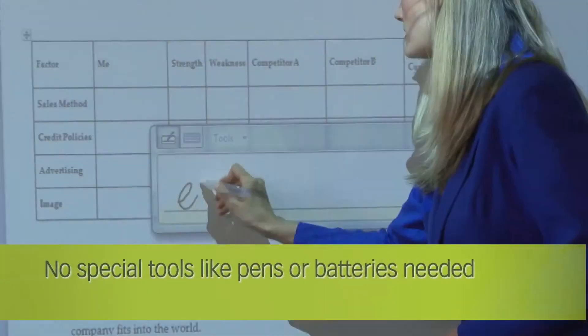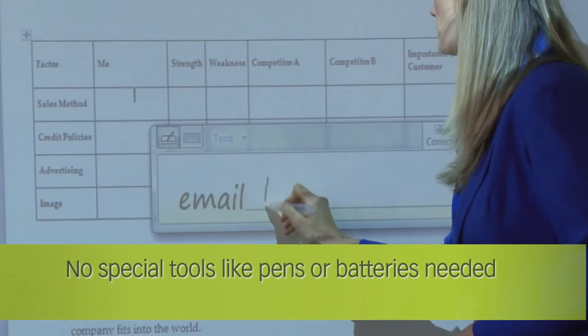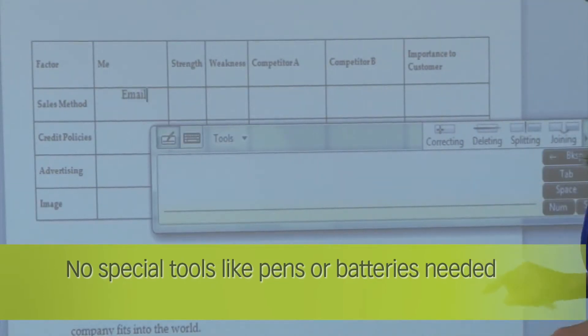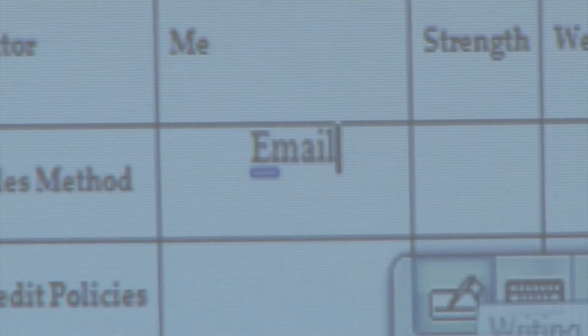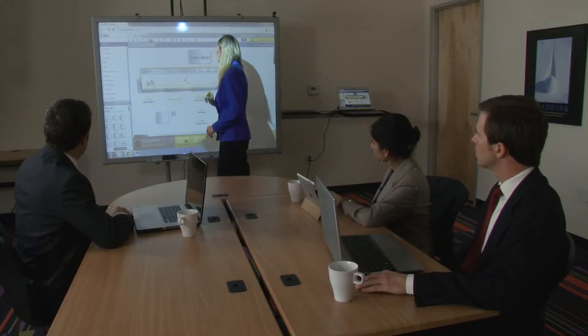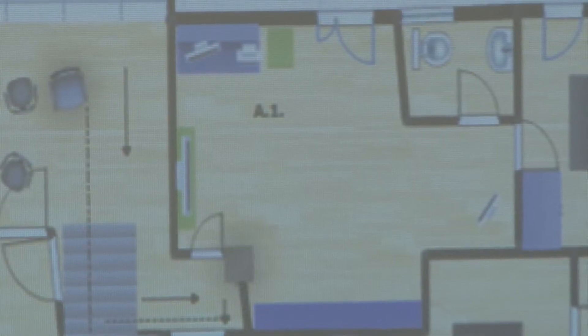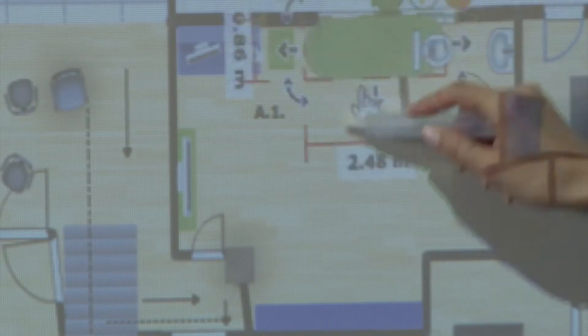To make your life easier, the OneBoard requires no consumables like pens or batteries. You don't even need a special tool. Any type of pointer can be used - a pen, a pointer, or just a finger. Interactive software is a perfect fit for the OneBoard.